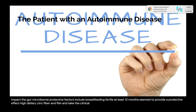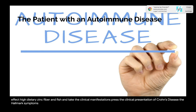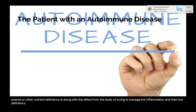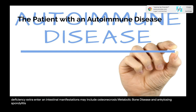Clinical presentation of Crohn's disease: hallmark symptoms include abdominal pain, chronic diarrhea, nausea, vomiting, weight loss, growth failure in children and adolescents, fever, and fatigue — which may result from anemia or other nutrient deficiencies. Extra-intestinal manifestations may include osteonecrosis, metabolic bone disease, and ankylosing spondylitis.